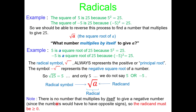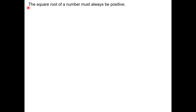Also note: there's no number that multiplies times itself to give you a negative number. So the answer to a square root is going to be positive, unless you put a minus sign in front. Also, the radicand has to be 0 or more — greater than or equal to 0 — because no number squared is ever going to be negative. The square root of a number must always be positive.